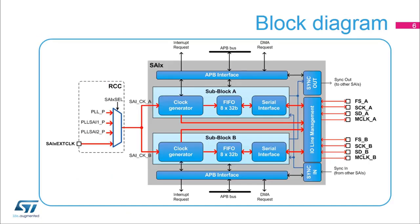The SAI is composed of two independent sub-blocks, A and B. Each sub-block has its own APB interface, clock generator, FIFO buffer, DMA interface, and interrupt interface. Each sub-block can be configured in receive or transmit, master or slave, with its own protocol. Internal and external synchronization allows two sub-blocks or two SAIs to be synchronized. Each sub-block can handle up to four IOs.